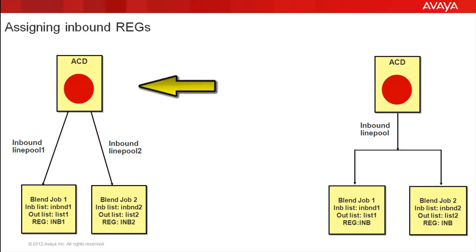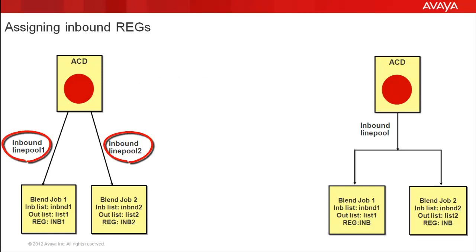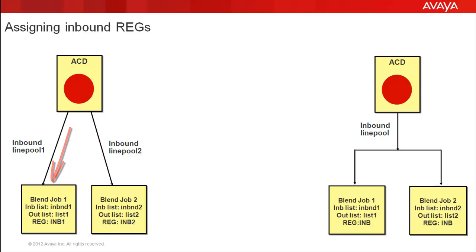The example on the left of the screen shows two inbound line pools — one and two — separately coming from the ACD, with the two blend jobs running with their own calling lists INBND one and INBND two. So if a call comes into line pool one it will land on blend job one, and the campaign update can be run to mark the outbound list of blend job one. Similarly if it comes to line pool two, the campaign update will mark the outbound list of blend job two — separate inbound line pools for separate blend jobs.